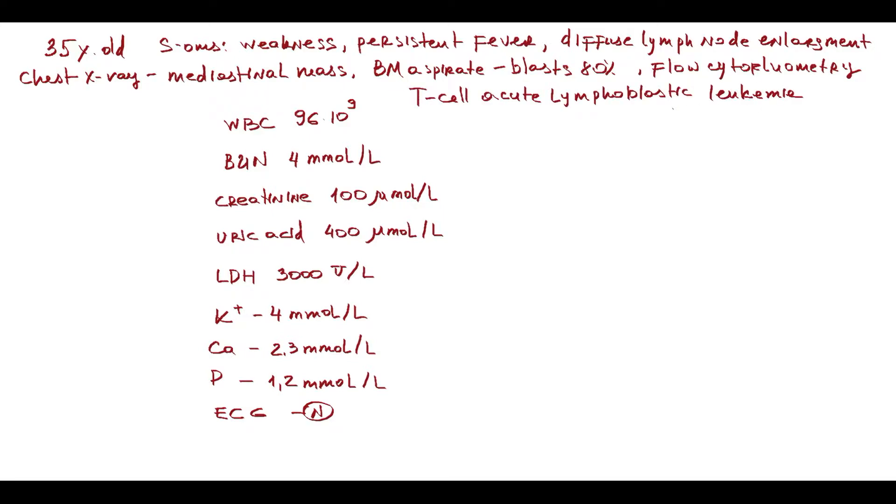So T-cell acute lymphoblastic leukemia is diagnosed, which is quite uncommon in adults. A specific feature of acute lymphoblastic leukemia is high lactate dehydrogenase level, which shows high tumor burden. By this term, we mean high amount of cancer cells, in our example, blast cells. Acute lymphoblastic leukemia needs aggressive chemotherapy.